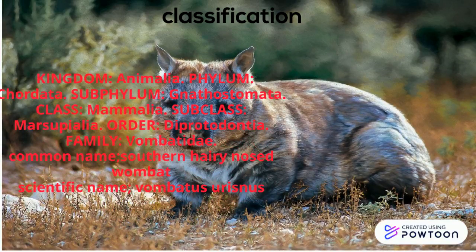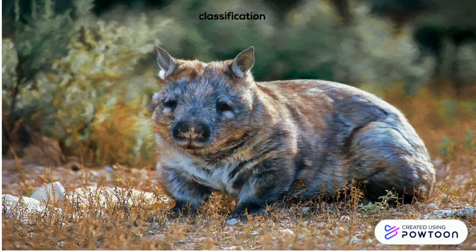Classification. Kingdom Animalia, Phylum Chordata, Subphylum Gnathos Domata, Class Mammalia, Subclass Massupialia, Order Distrobdontia, Family Vombertebrae. Common name: Southern Hairy Nose Wombat. Scientific name: Vombatus Eurusnus.